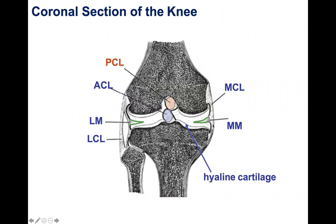The MCL is a very thick ligament on the medial aspect of the knee. Interestingly, there is really no space between the MCL and the medial meniscus — they're in close association and hook together. Clinically, this means when you hurt your MCL, you often hurt your medial meniscus as well, and vice versa, due to their connection.